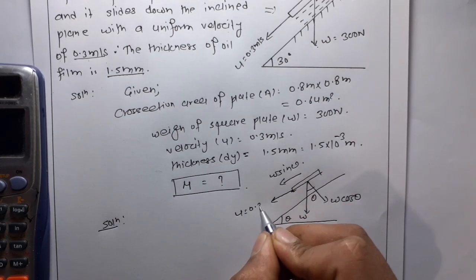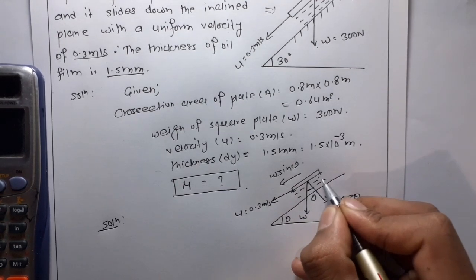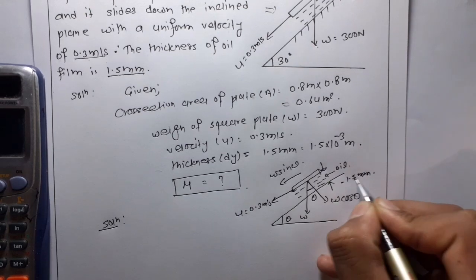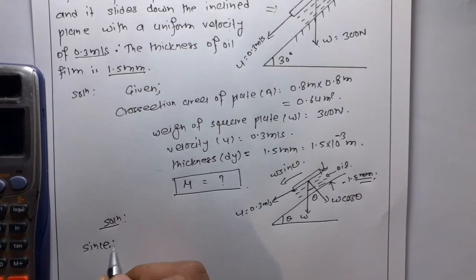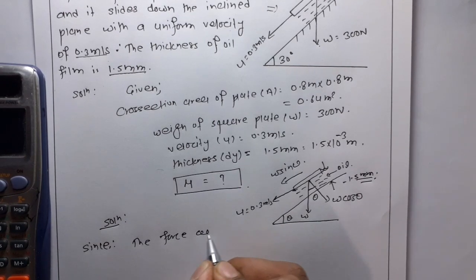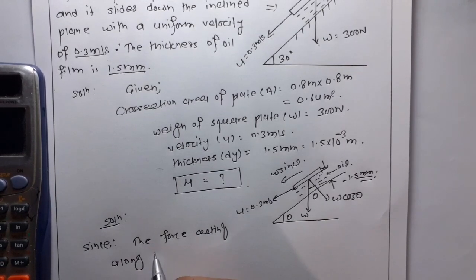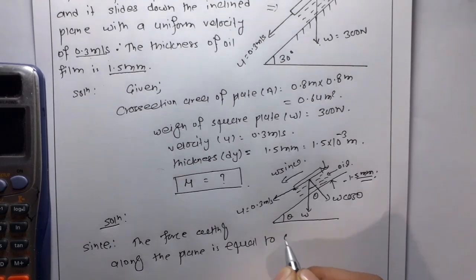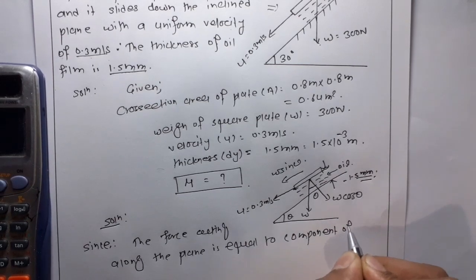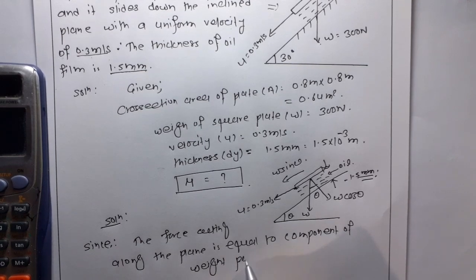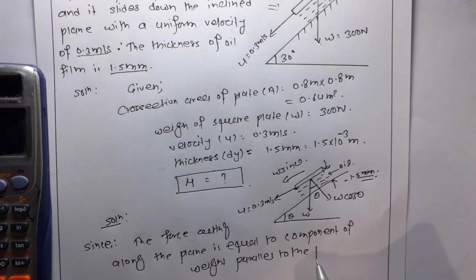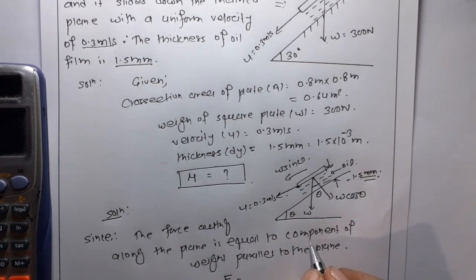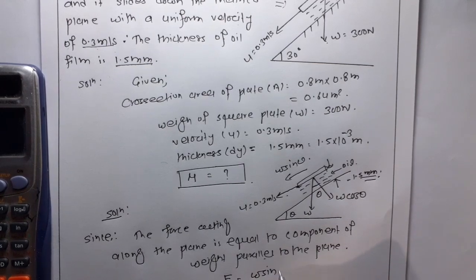U is equal to 0.3 meter per second and the oil whose thickness is 1.5 mm. Since the force acting along the plane is equal to the component of weight parallel to the plane.